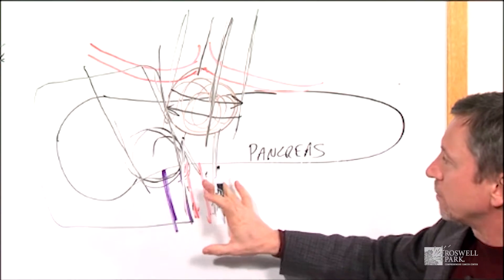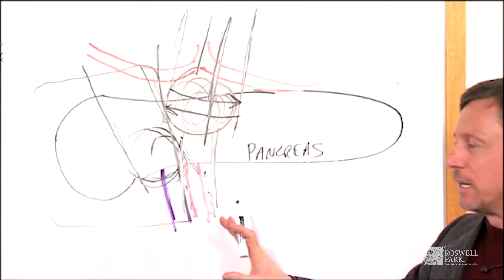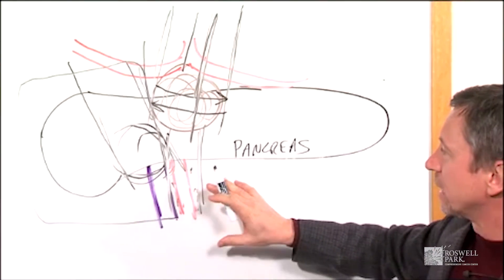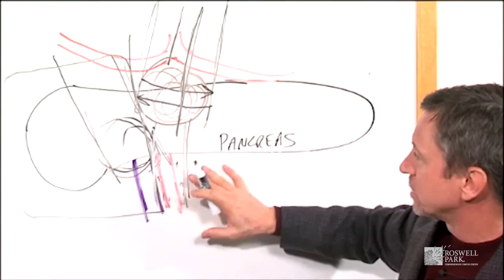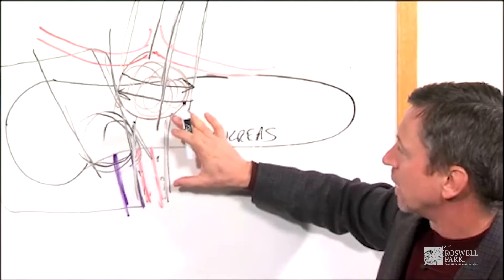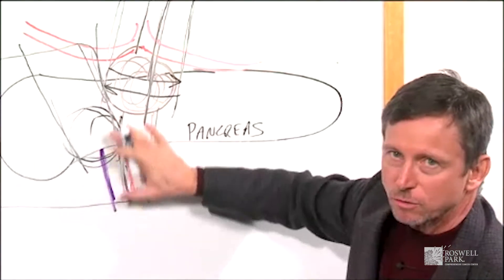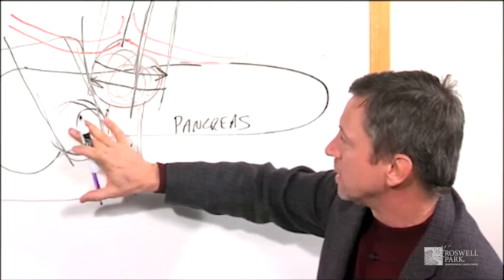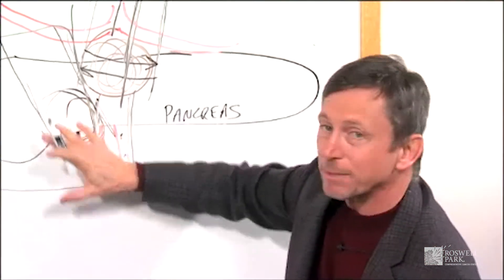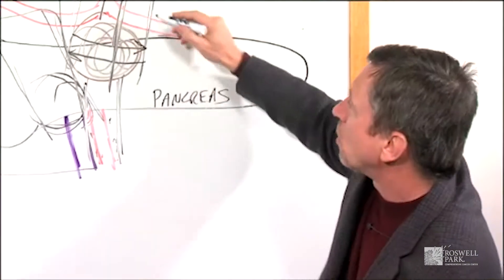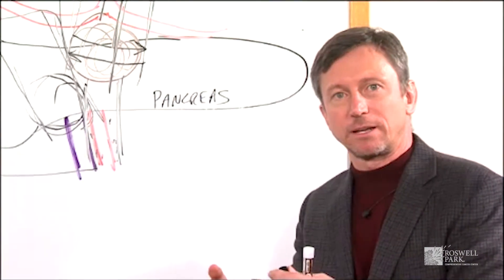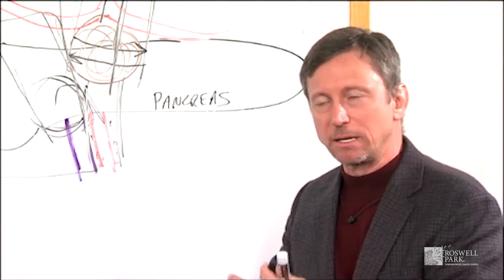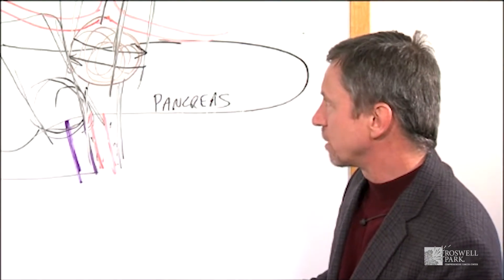So this would be something that's done in addition to surgery. We call that accentuation or margin accentuation where we actually try to kill any tumor that might be at the margin. NanoKnife can be done in combination with removing the tumor, or it can be used where the tumor is actually left in place and the NanoKnife becomes the major treatment.